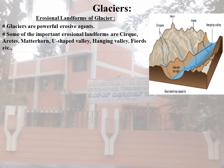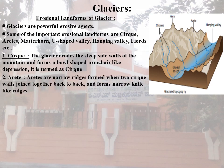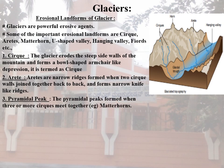Most of these glacial features are predominantly seen in countries like Switzerland, Norway, etc. The first erosional landform of glaciers is Cirque. The glacier erodes the steep side wall from the mountain and forms a bowl-shaped, armchair-like depression, which is termed a Cirque. The second one is Arêtes, which are narrow ridges formed when two cirque walls join together back to back, forming narrow knife-like ridges.